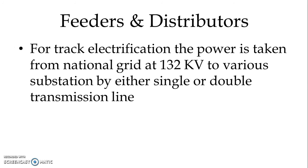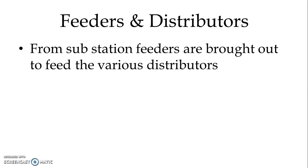Now let us start with feeders and distributors. For direct electrification, the power is taken from the national grid normally at 132 kV to various substations by either single or double transmission line. From the substation, feeders are brought out to feed the various distributors.